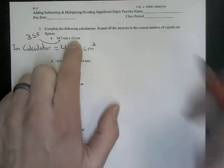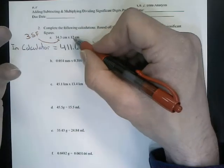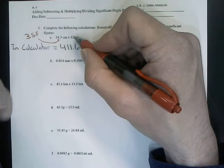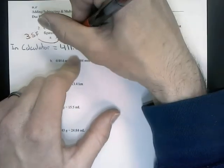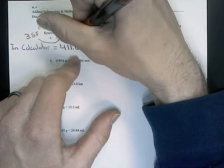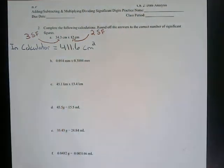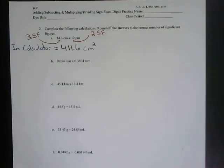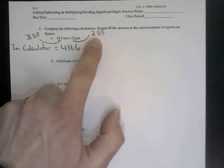Now, for 12, we ask ourselves, is the 1 significant? Yes, it's non-zero. And is the 2 non-zero or significant? Yes. So we have 1, 2. We ask ourselves, which of these numbers has the fewest significant digits? Well, it's 12.